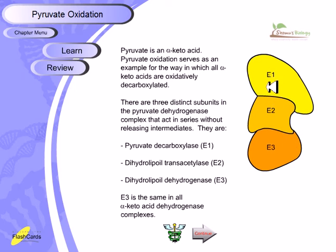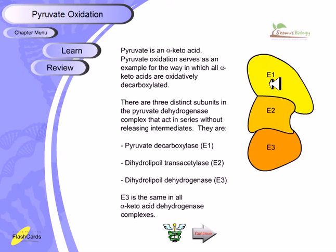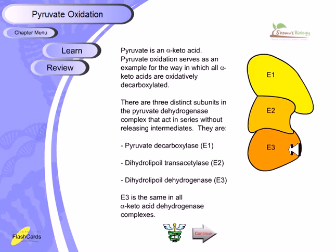Pyruvate is an alpha-keto acid, and its oxidation serves as an example of how all alpha-keto acids are oxidatively decarboxylated. The PDH complex has three distinct subunits: E1 is called pyruvate decarboxylase, E2 is dihydrolipoyl transacetylase, and E3 is dihydrolipoyl dehydrogenase. E3 is the same in all alpha-keto acid dehydrogenase complexes, but E1 and E2 vary from one type of dehydrogenase complex to another.